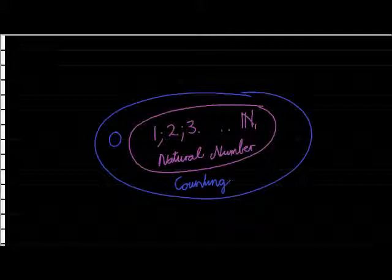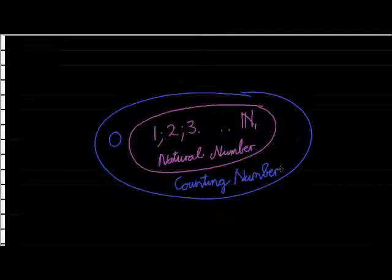Why does that make sense? If you ask me how many children I have, I might say 1 or 2. But I could also say 0, because I have none. Counting numbers therefore include all of the natural numbers — that's why the pink circle is inside the blue circle — and also 0.